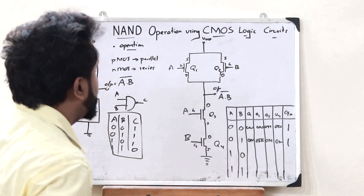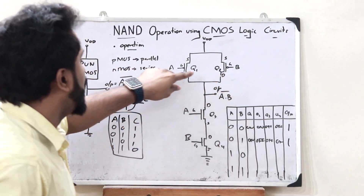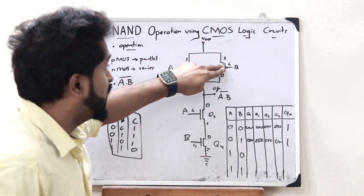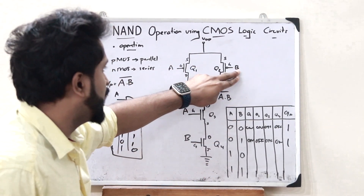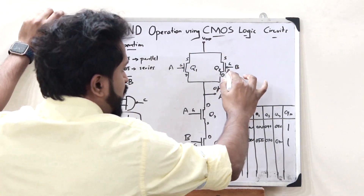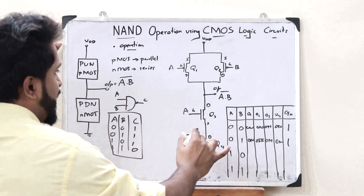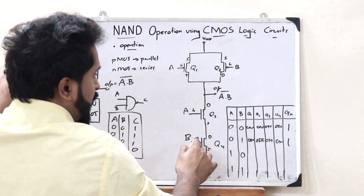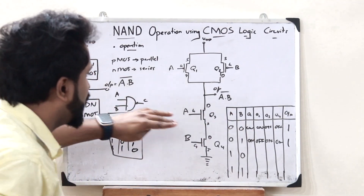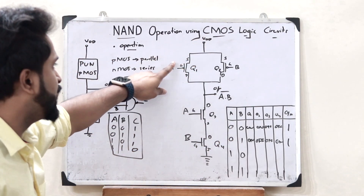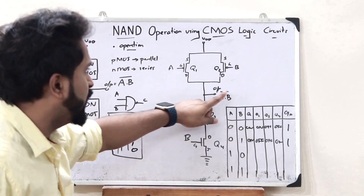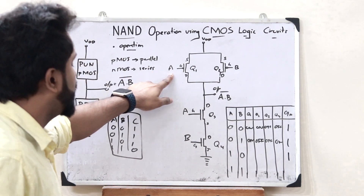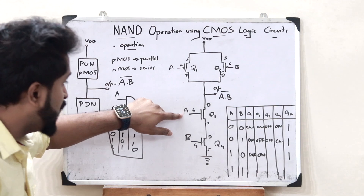When A=1 and B=0: since A=1, the PMOS transistor Q1 is off; since B=0, Q2 is on. Voltage flows through Q2 and is obtained at the output, giving output 1. In the NMOS side, since A=1, Q3 is on; but since B=0, Q4 is off — the pull-down path is cut off. So whatever comes through Q2 goes to the output. Q1 is off, Q2 is on, Q3 is on, and Q4 is off.